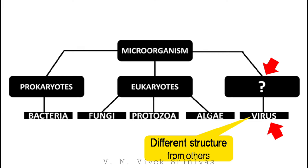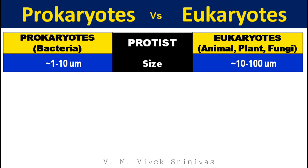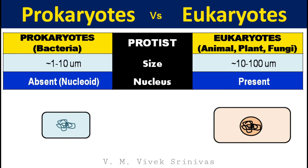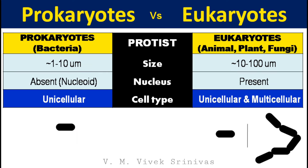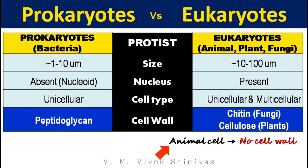The differences between prokaryotes and eukaryotes: size-wise, eukaryotic cells are 10 to 100 times larger than prokaryotic cells. Prokaryotic cells do not contain a nucleus; instead they have nucleus-like material called nucleoid, which lacks a nuclear membrane. Eukaryotic cells possess a well-defined nucleus. Prokaryotes are unicellular, whereas eukaryotes are unicellular and multicellular. The cell wall of bacteria is rich in peptidoglycans; animal cells lack a cell wall, but plant cells possess a cell wall rich in cellulose.